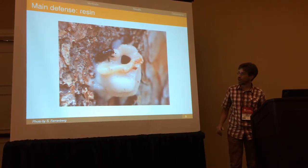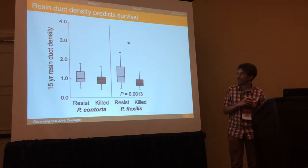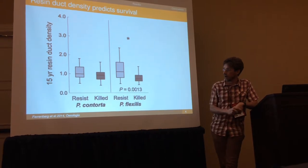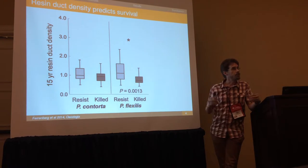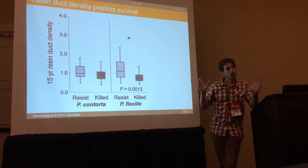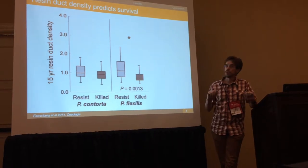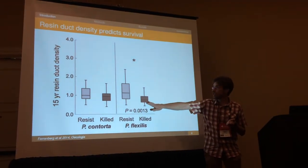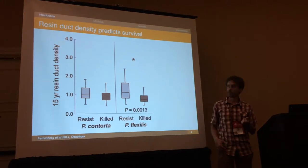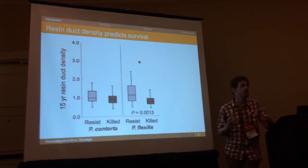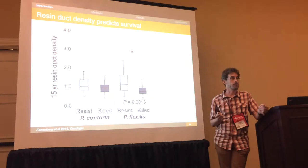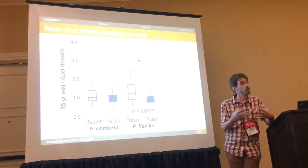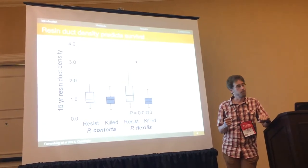Here's an example from our co-author Scott Ferenberg, working with Jeff Kane. They examined two populations of pines — we'll talk about Pinus flexilis here, where there's a significant result. In this Pinus flexilis population in Colorado, all of the trees had been attacked by bark beetles, but the trees which survived had higher resin duct densities — axial resin ducts in the secondary xylem — than did the trees which succumbed. Researchers have also found that other resin duct traits such as total resin area, resin duct area, and resin duct diameter could be predictive as well.